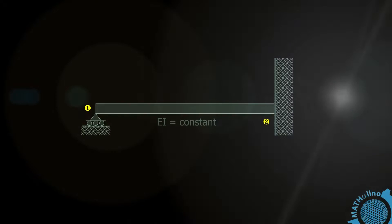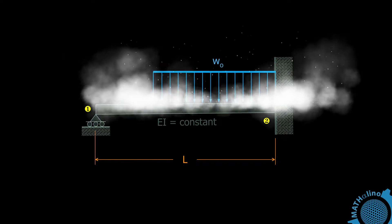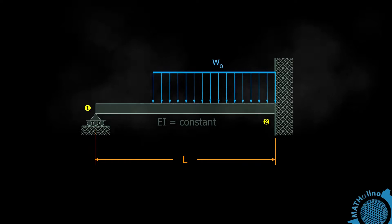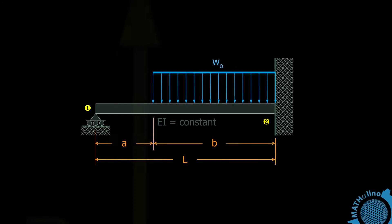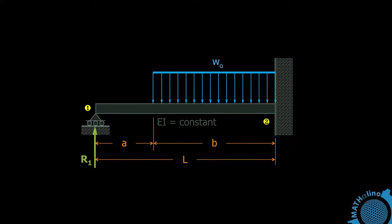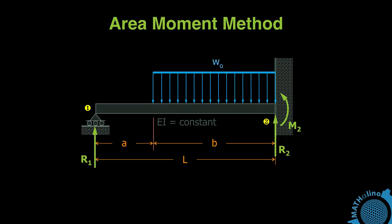Problem 704. We have a propped beam of length L loaded as shown. We are going to solve the reactions R1, R2, and M2 using the area moment method.